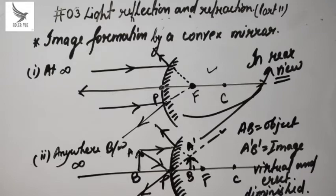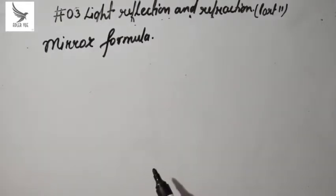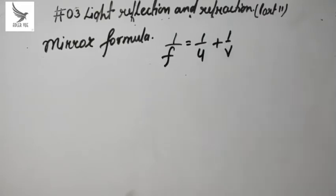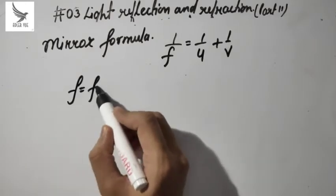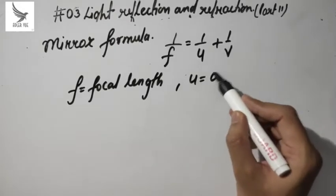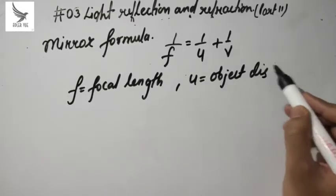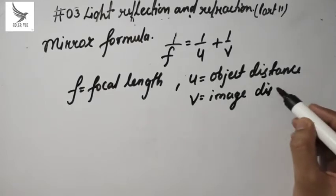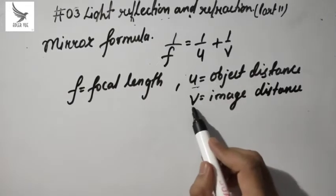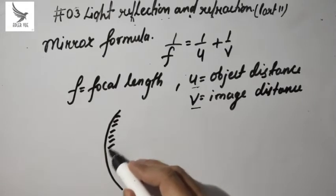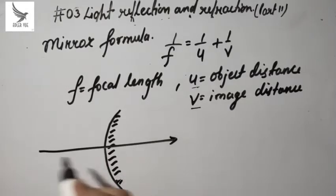Now we have seen image formation by concave and convex mirrors. Now we will look at some numerical aspects — that is the mirror formula. The mirror formula is a relationship between the focal length, the object distance, and the image distance. F is the focal length, U is the object distance, and V is the image distance.